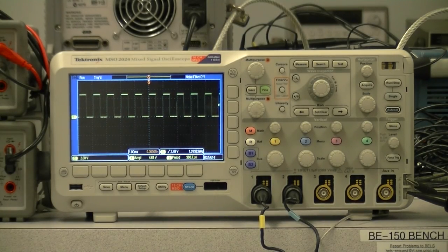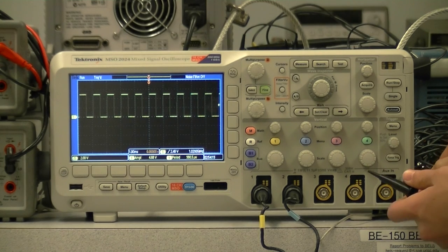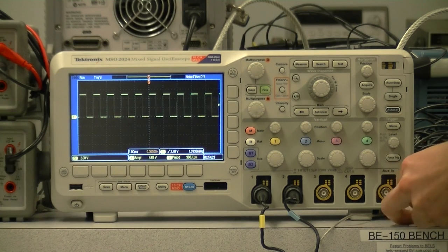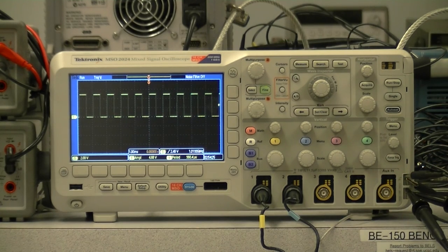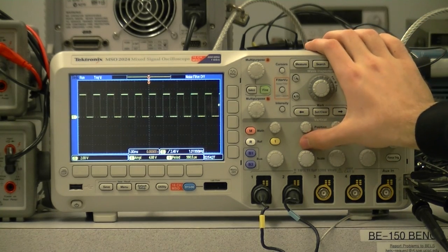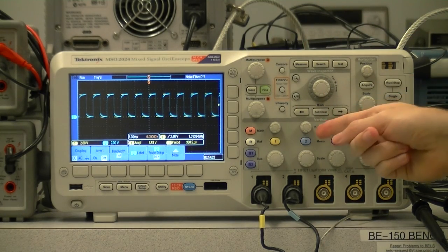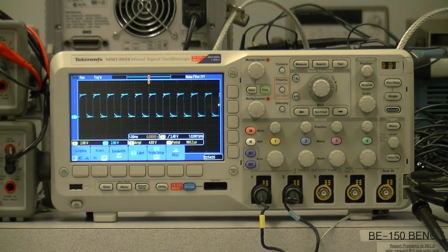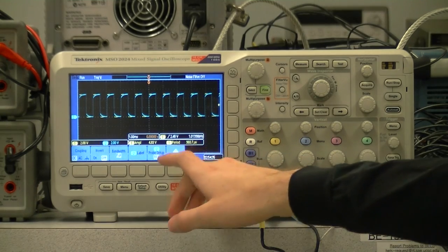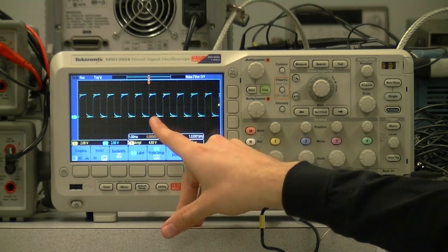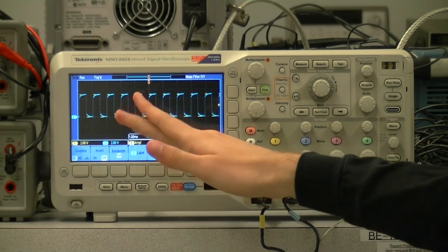Now we want to hook up a second channel, the blue channel. We hook this up to the calibration input as well. You can just fit two channels on here if you're careful. And then we want to turn this channel on by pressing the appropriate numbered button. If we wanted to turn the channel off, we could push this button again while its menu is visible. Looking at the screen, we see a bit of a problem. Rather than a nice clean square wave like the yellow channel, we have these rounded corners. That means the probe is not properly compensated.